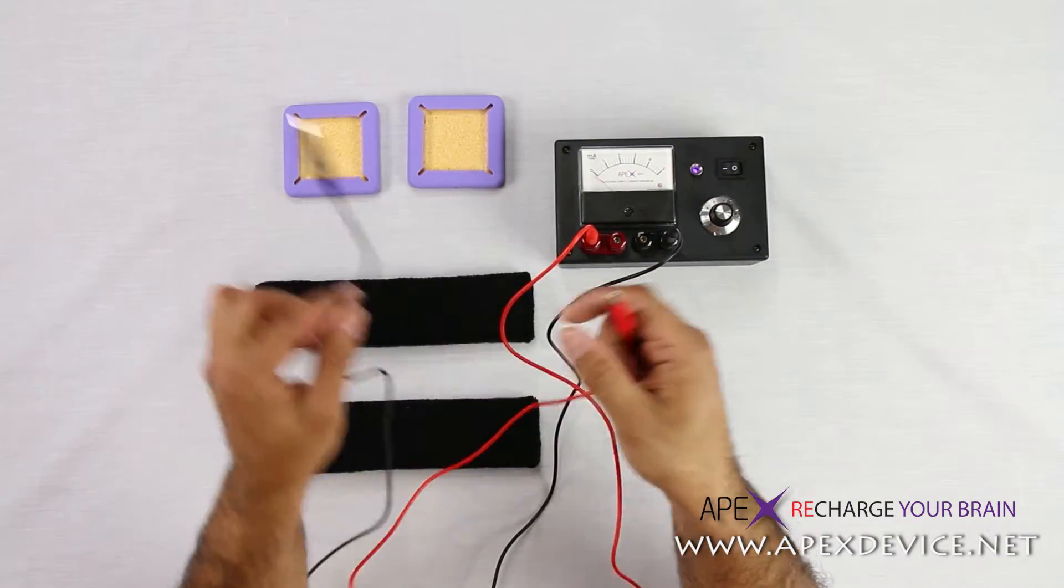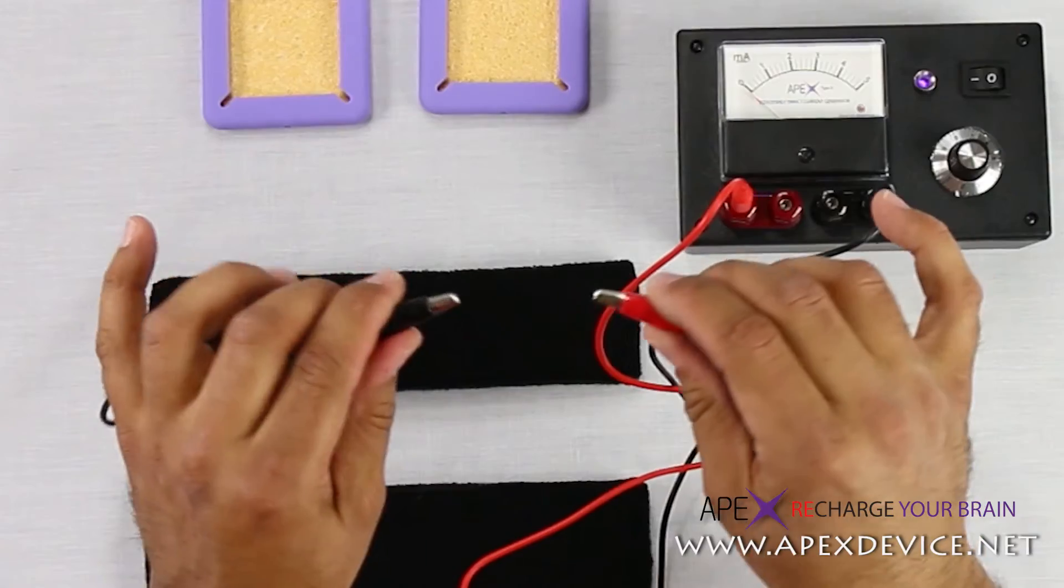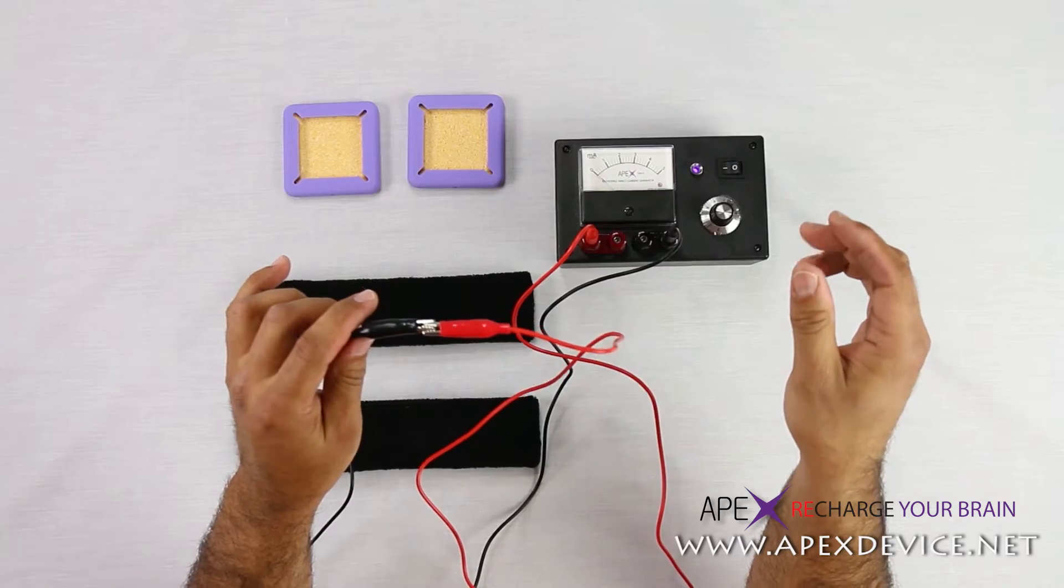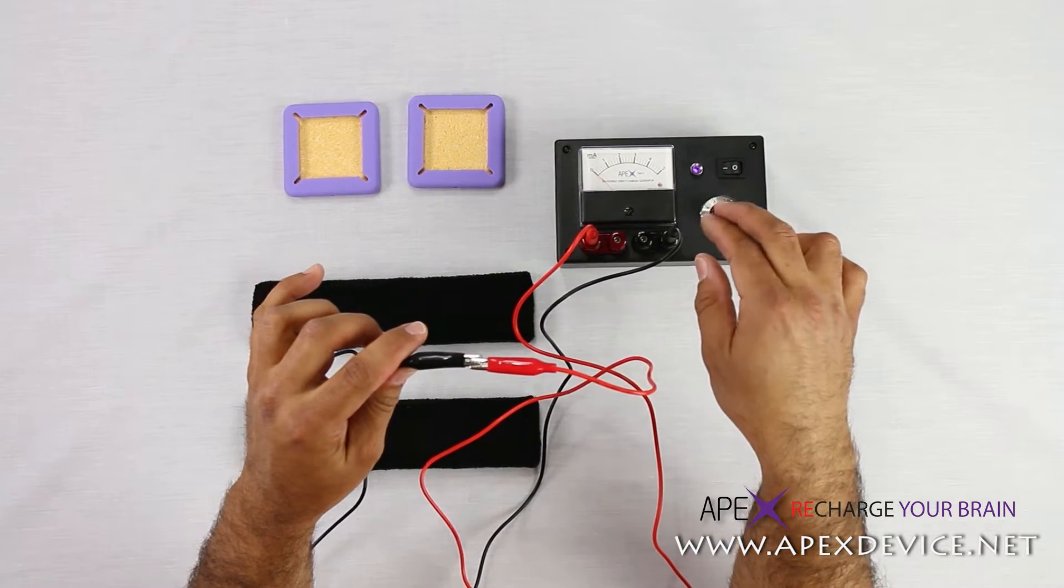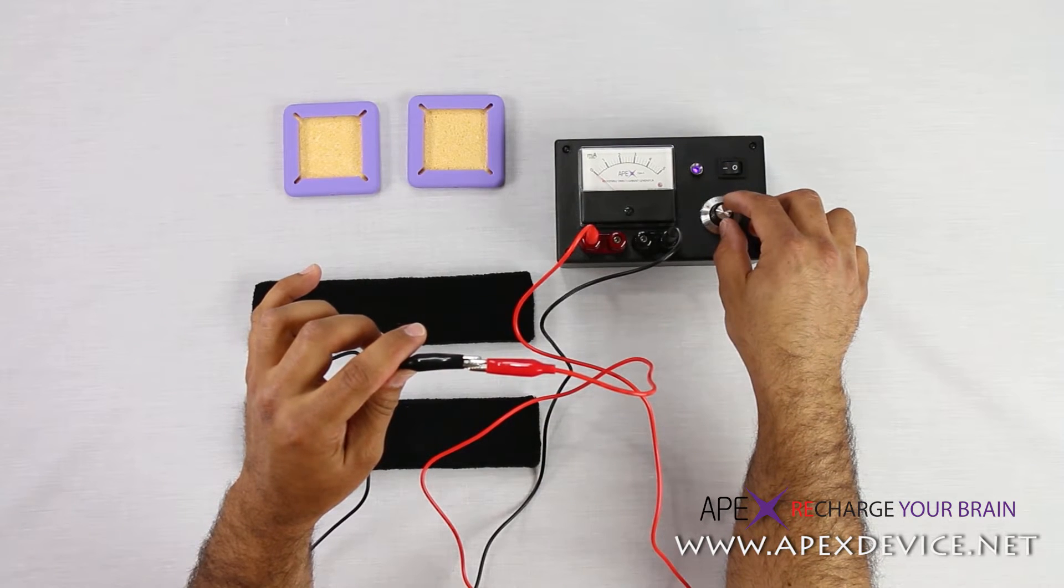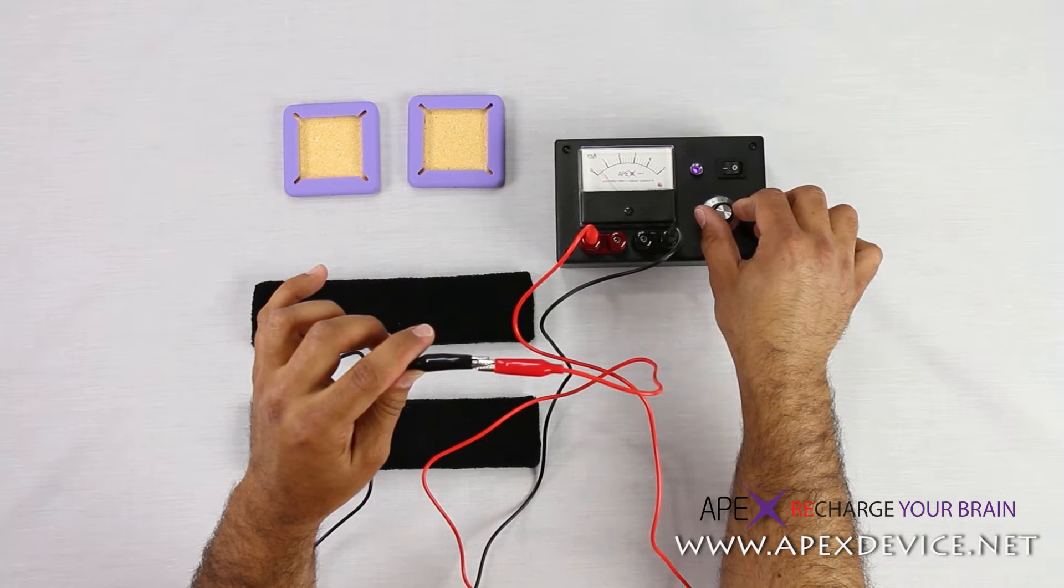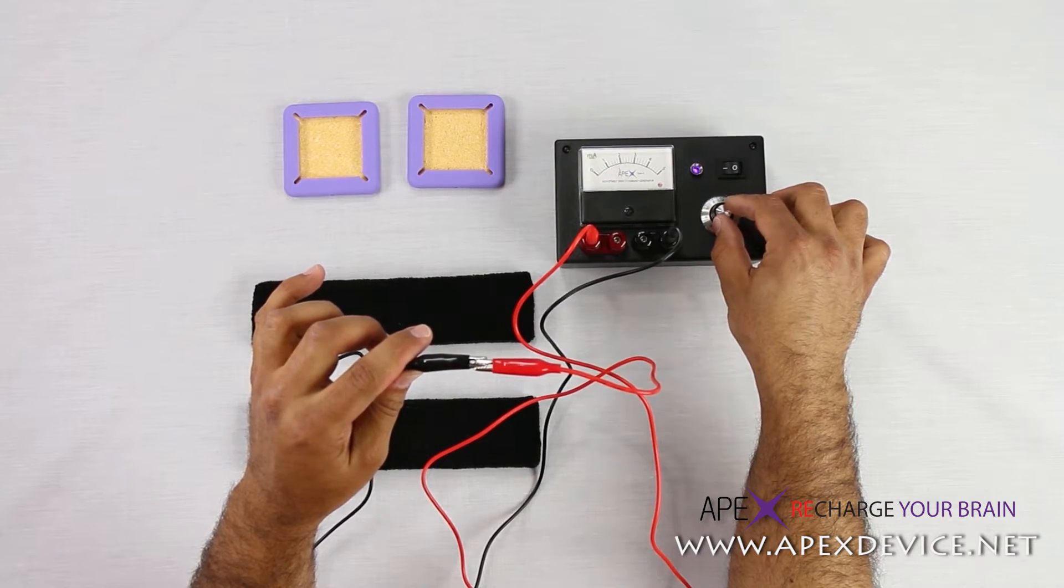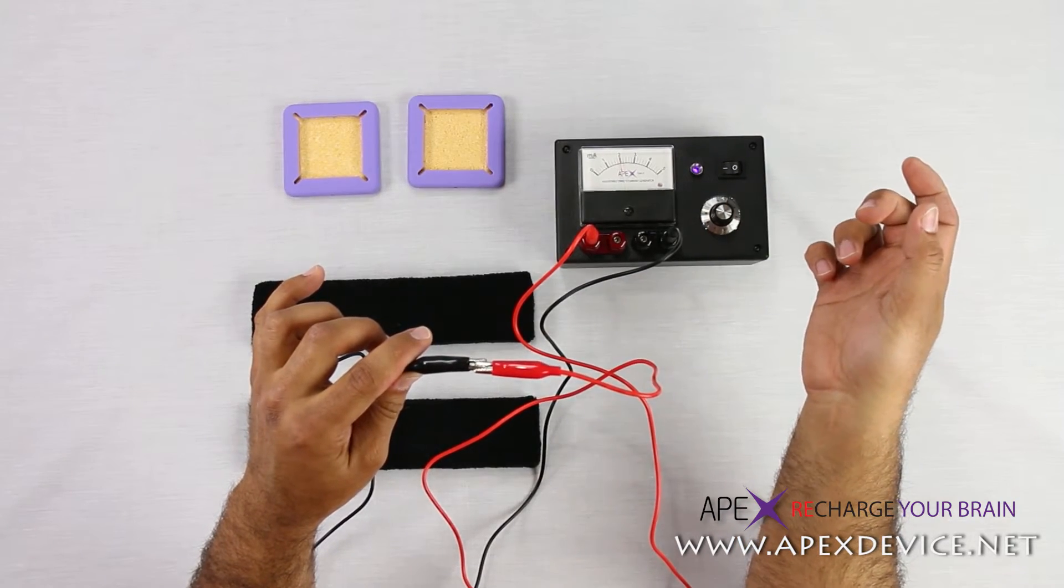One of the ways that you can test the unit to make sure that it's working properly is you can take the electrode cables at this time and you can connect them together gently like this. And you're going to notice that there's going to be a little bit of movement on your Type A meter there. And all you need to do now to make sure the unit is working within specifications is turn the knob up, and you're going to see it's going to reach 2 milliamps.